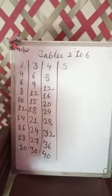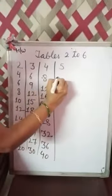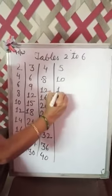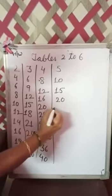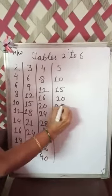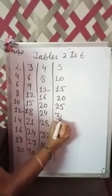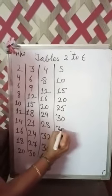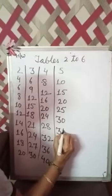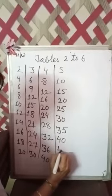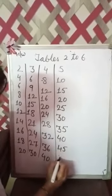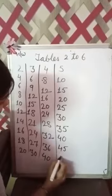5 5's are 45. 5 6's are 30. 5 7's are 35. 5 8's are 40. 5 9's are 45. 5 10's are 50.